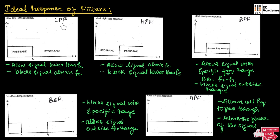First, let us consider a low-pass filter. This is the ideal response of a low-pass filter. This filter allows the signal with a certain frequency that is lower than the cut-off frequency FC to pass through, and it will attenuate the signal with frequency higher than FC. The frequencies that are passed through the filter are known as passband frequencies, and the region is known as passband. The frequencies that are attenuated and blocked are known as stopband frequencies, and the region is known as stopband.